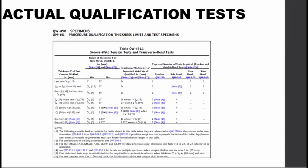Here's the table in ASME Section 9 specifying the tests and number of specimens needed to qualify the weld. It tabulates the type of tests — tension test, bend test, etc. — and the thickness of the weld coupon. These parameters identify the number of specimens needed to qualify the weld. The number of specimens will also depend on which code or standard the WPS complies to.